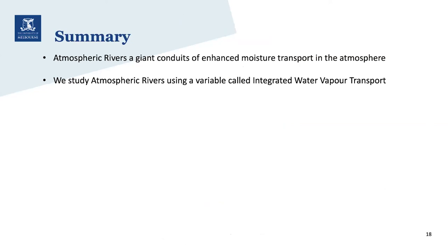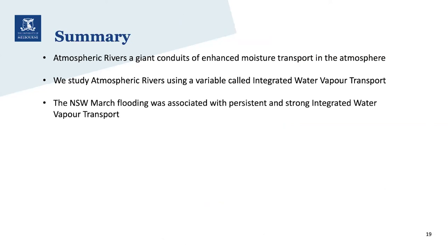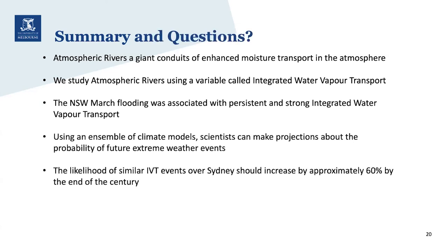To summarize: atmospheric rivers are giant conduits of enhanced moisture transport in the atmosphere, and we study them using integrated water vapour transport. The New South Wales and Queensland March flooding was associated with persistent and strong IVT. Using climate models, scientists can make projections about future extreme weather, and we found that the likelihood of similar IVT events over Sydney should increase by approximately 60% by the end of the century.